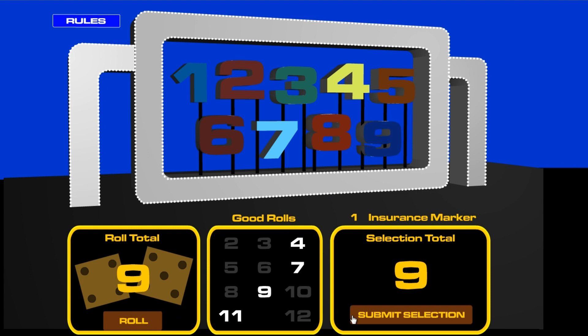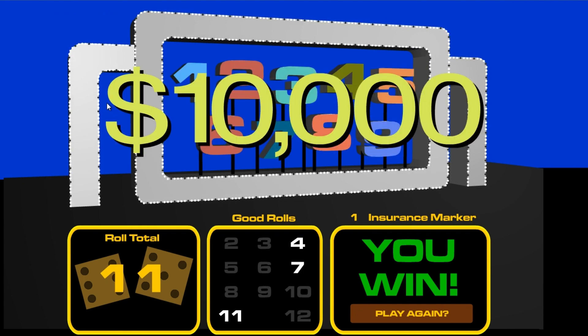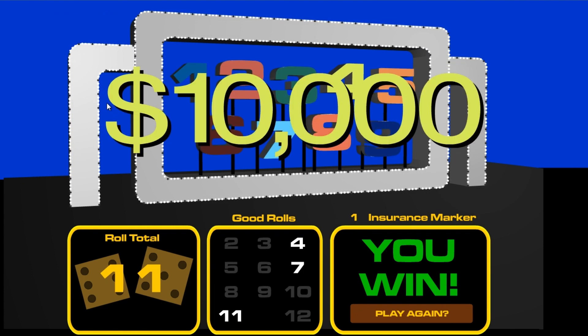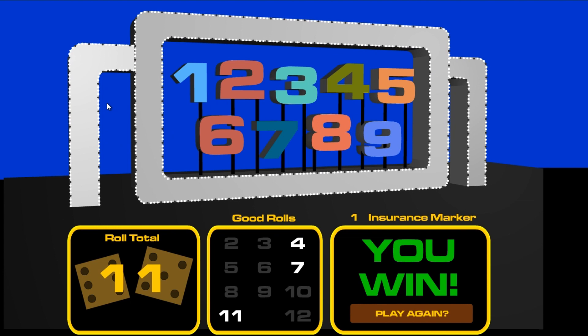All right, next roll is a nine. All right, let's see. An eleven for $10,000. There we go! It was a much shorter drought and we finally ended it.